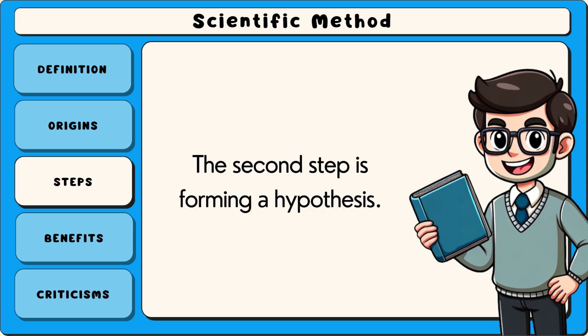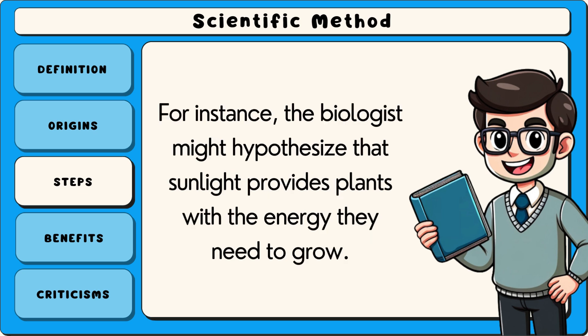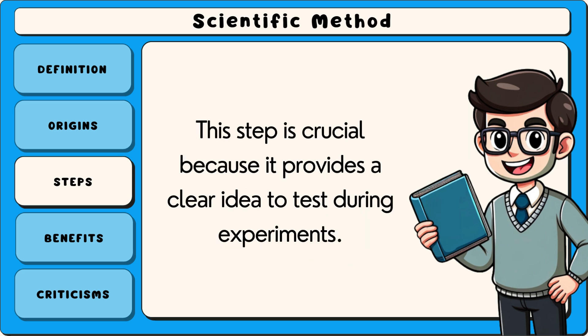The second step is forming a hypothesis. A hypothesis is an educated guess that explains the observations and can be tested. For instance, the biologist might hypothesize that sunlight provides plants with the energy they need to grow. This step is crucial because it provides a clear idea to test during experiments.